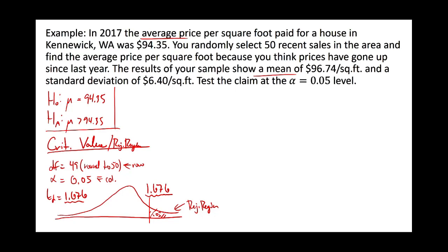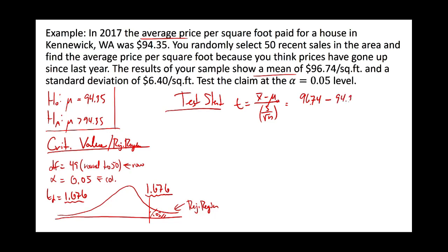For a less-than alternative you'd do the same process but use the negative value, giving a cutoff of negative 1.676 with the rejection region in the lower tail. Now we go get the test statistic. Since this is a test about means, it's a t-statistic: sample mean minus the claim value, divided by the sample standard deviation divided by root n.